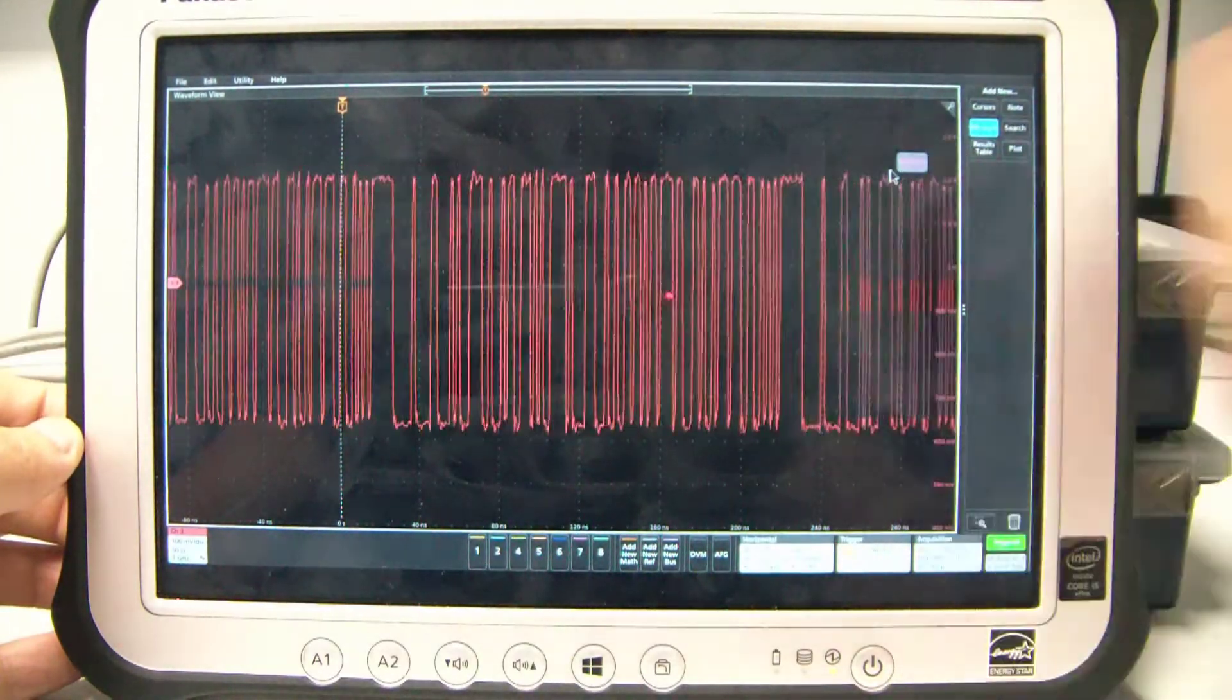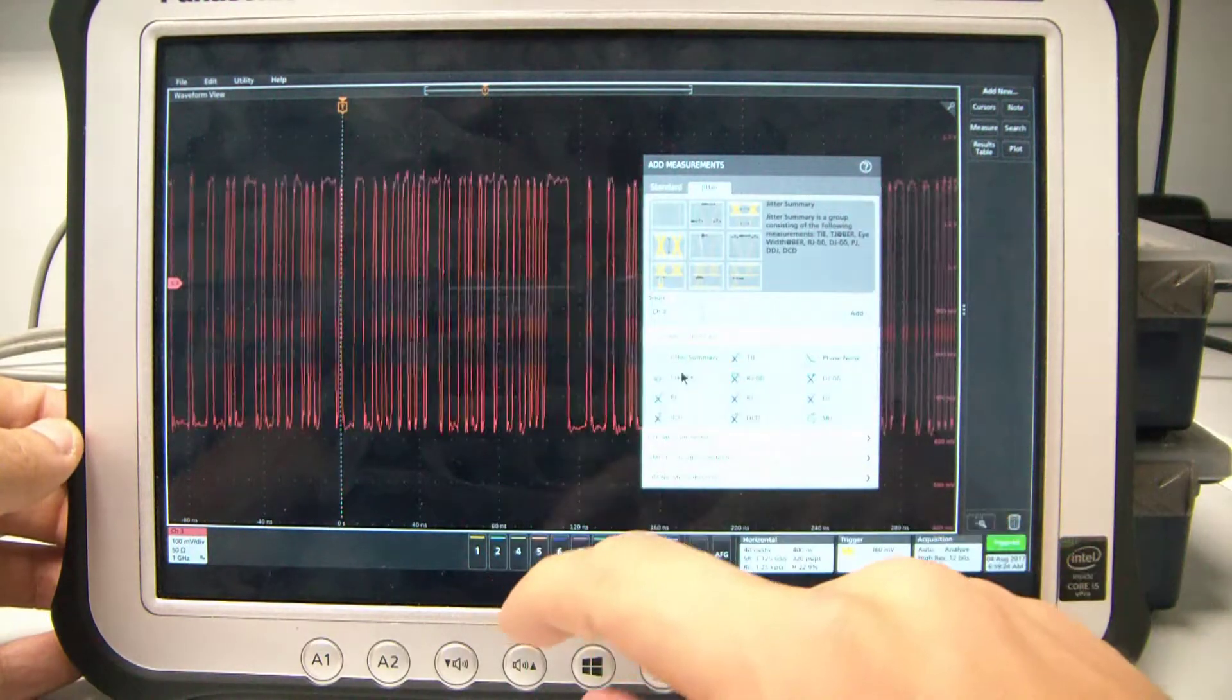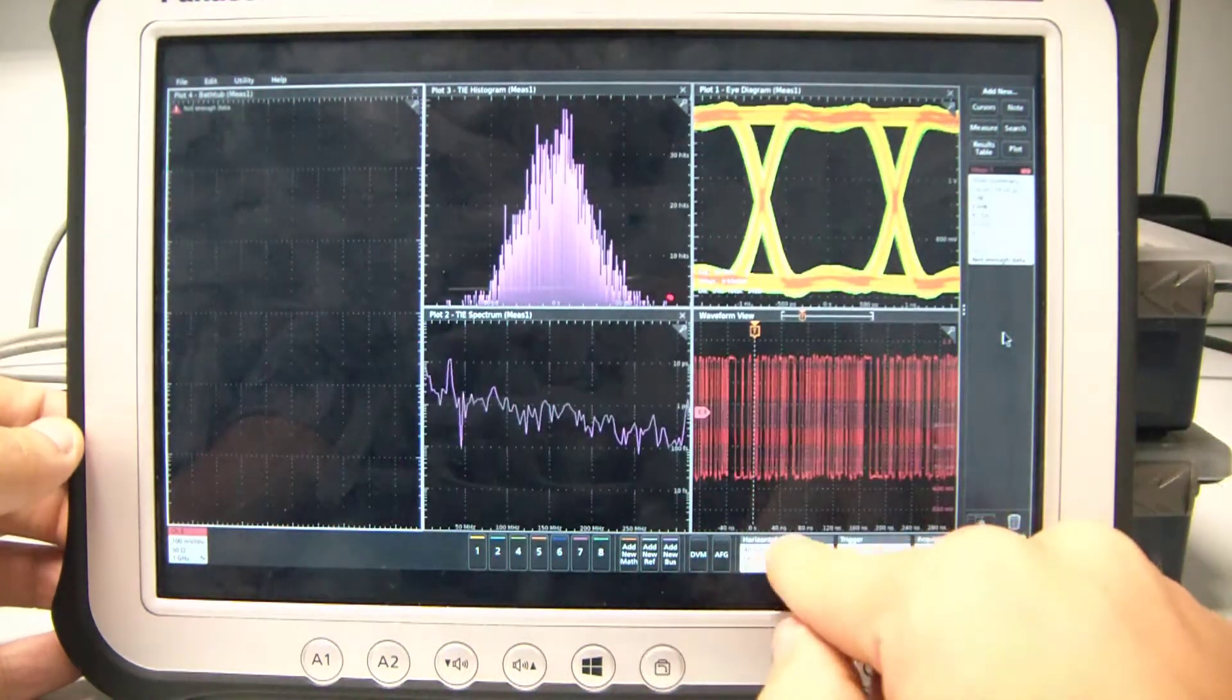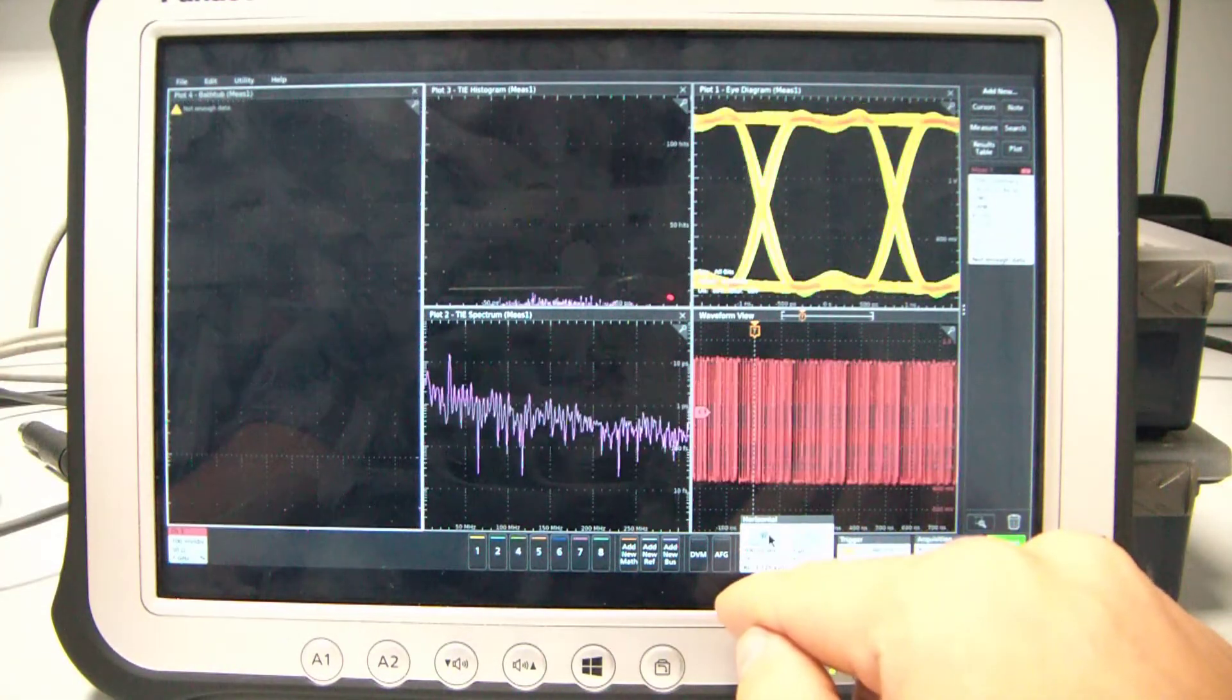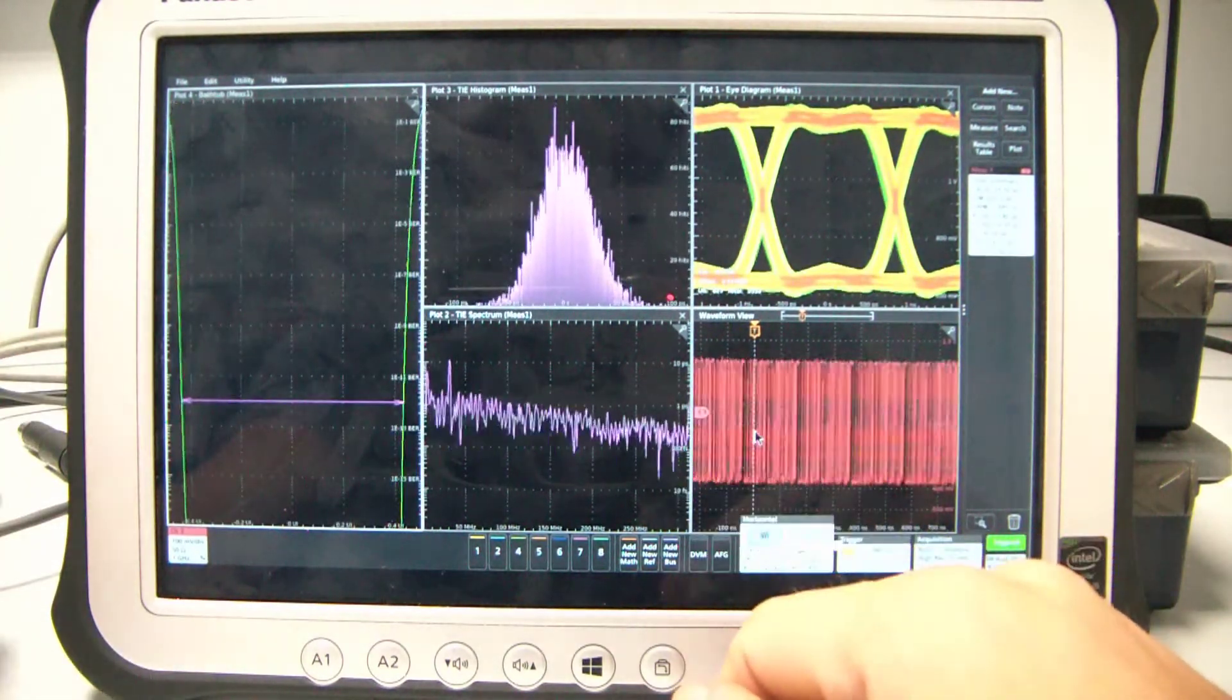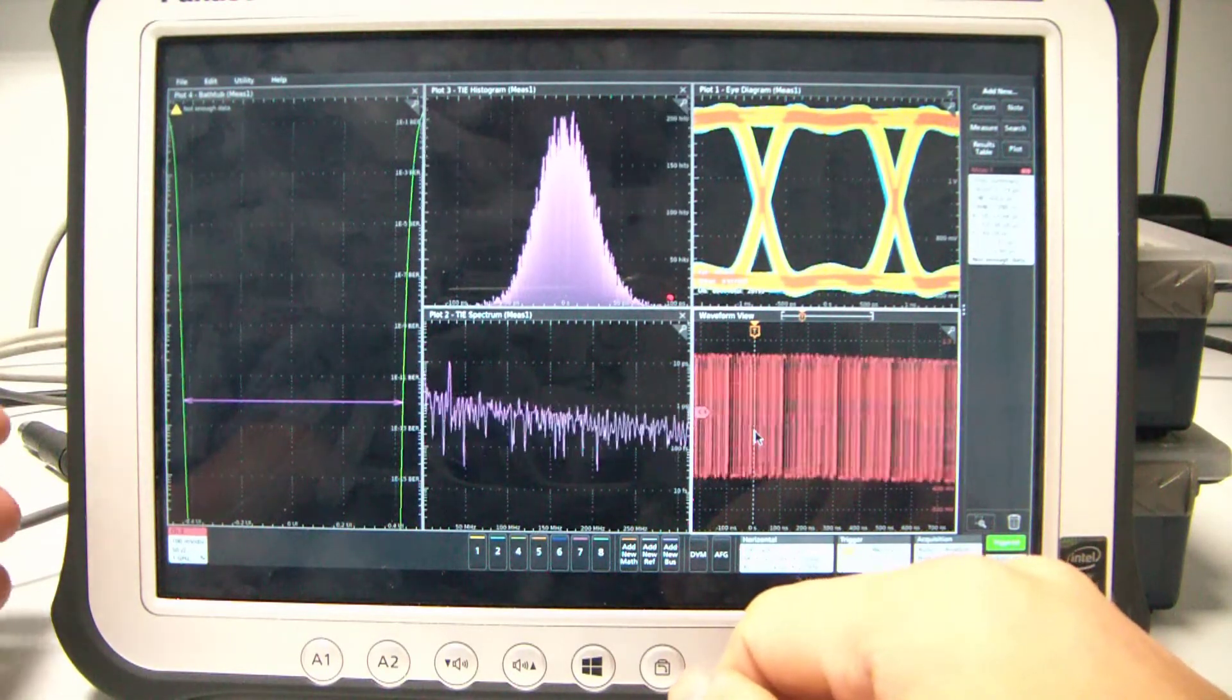So we'll bring up a measurement, jitter measurement, a jitter summary. And the jitter summary automatically displays all kind of relevant information regarding the jitter and signal integrity.